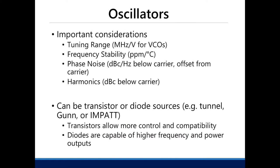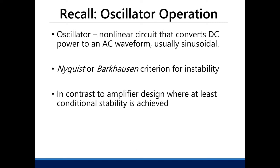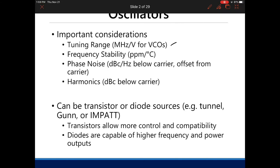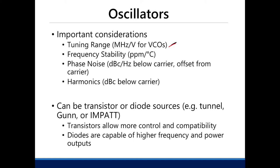Important parameters to consider when designing oscillators are the following. First is the tuning range — basically, what will be the frequency band of its operation? Is it large? Can it operate from, say, 1 MHz to 1 GHz and so on? This depends on your application, of course.